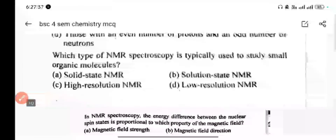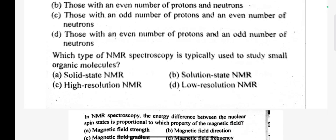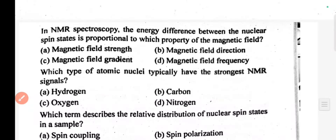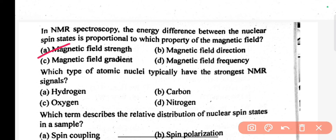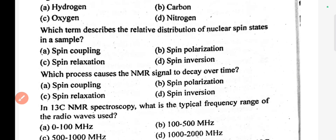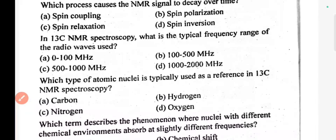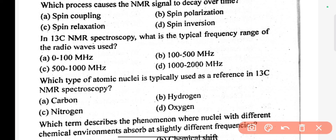Which type of NMR spectroscopy is typically used to study small organic molecules? The correct answer is B. In NMR spectroscopy, the energy difference between nuclear spin states is proportional to which property of the magnetic field? The correct answer is A. Which type of atomic nuclei typically have a stronger NMR signal? The correct answer is A. Which term describes the relative distribution of nuclear spin states in a sample? The correct answer is B. What causes the NMR signal to decay over time? Spin relaxation.